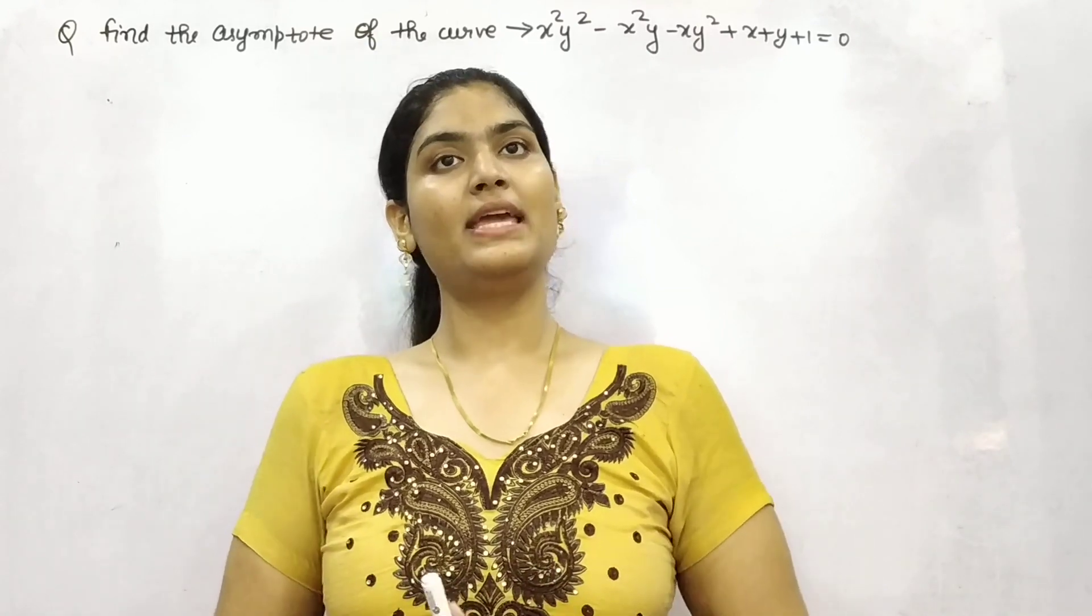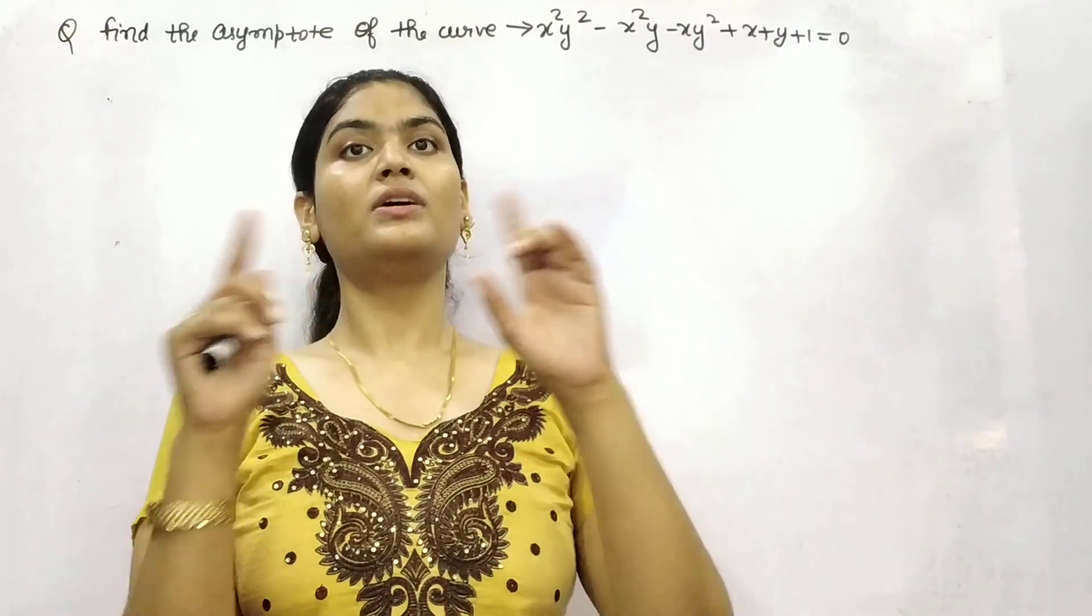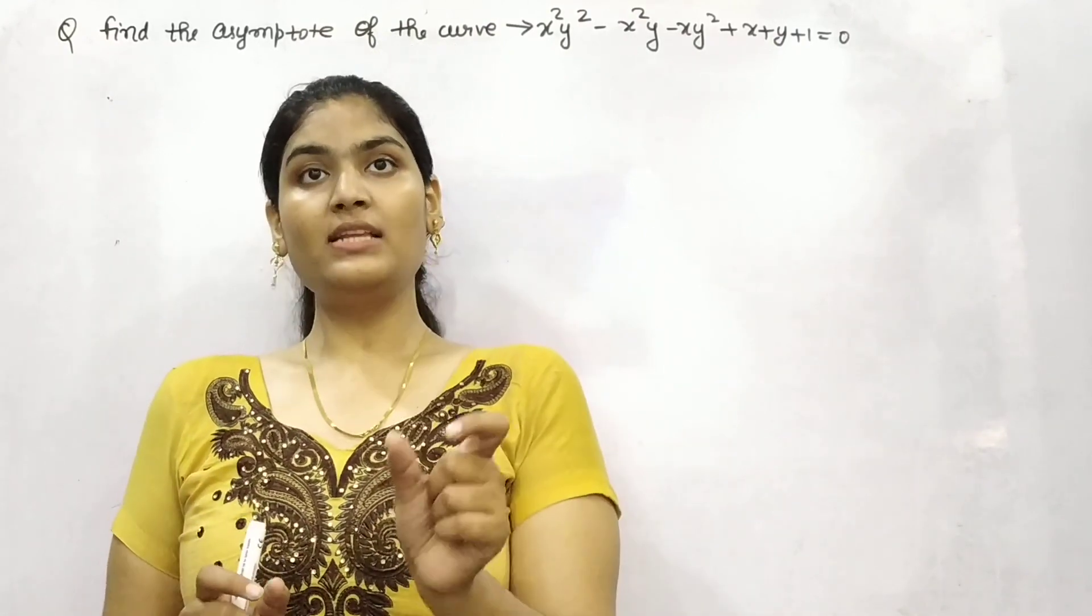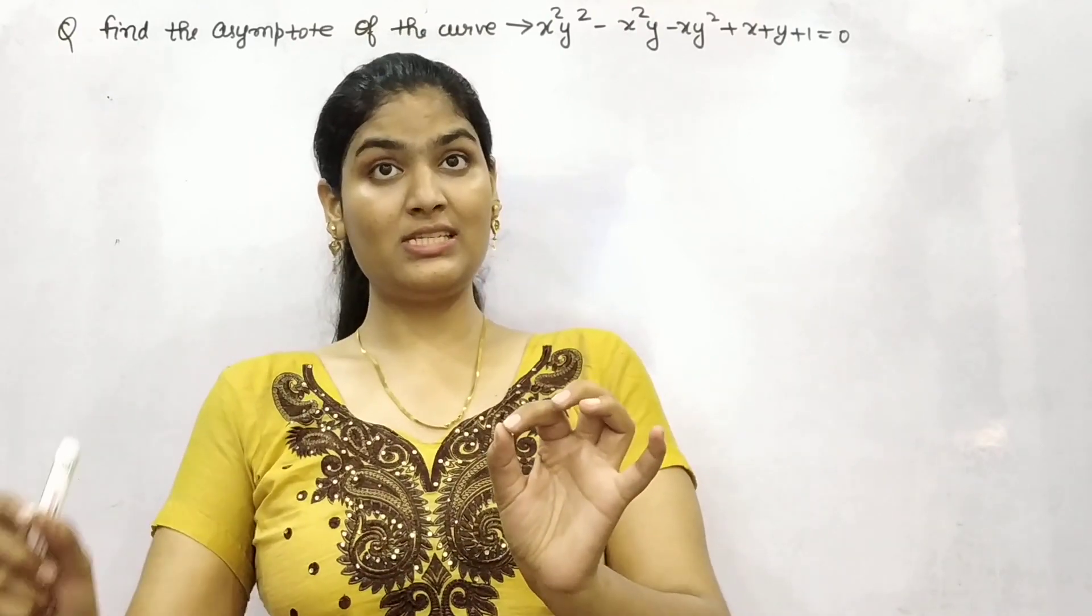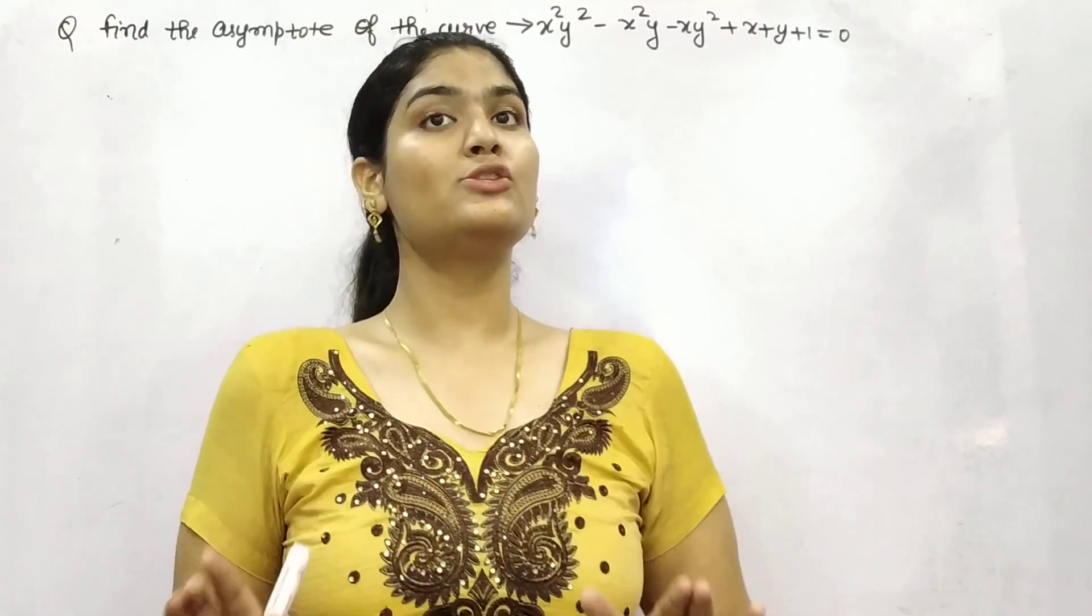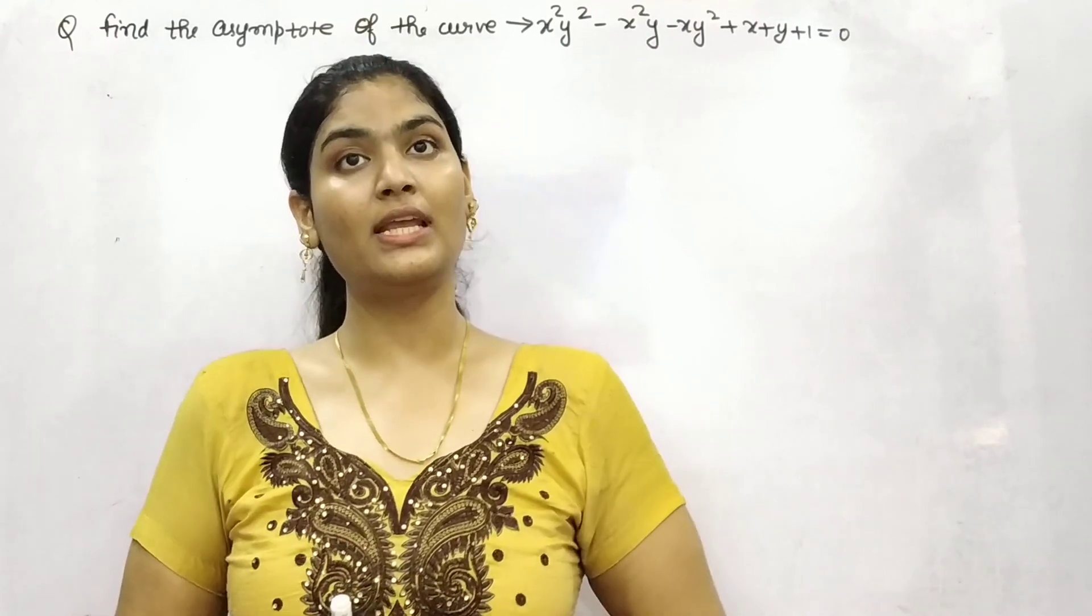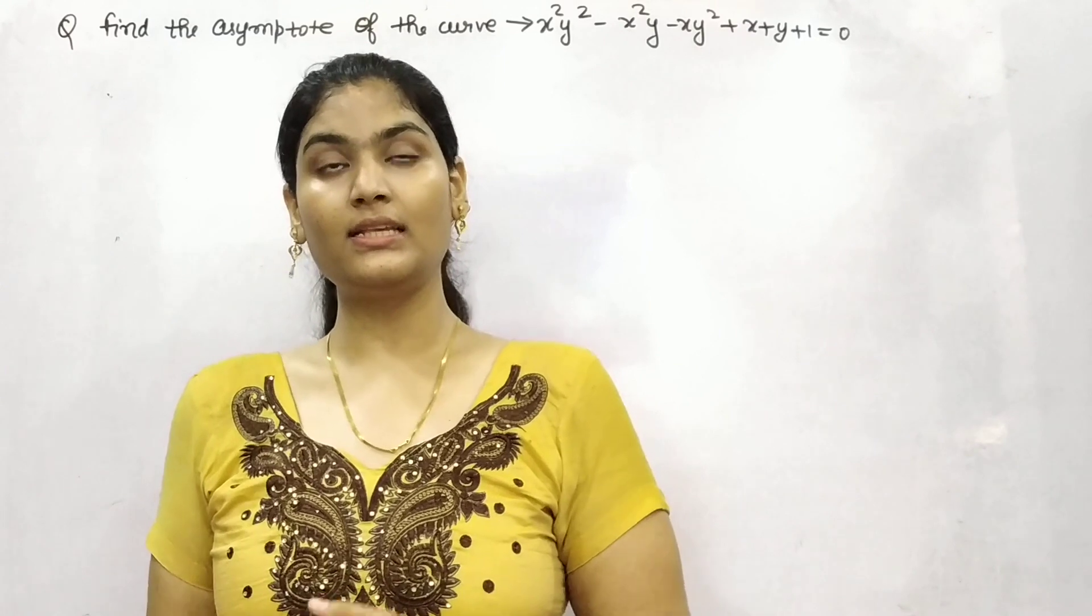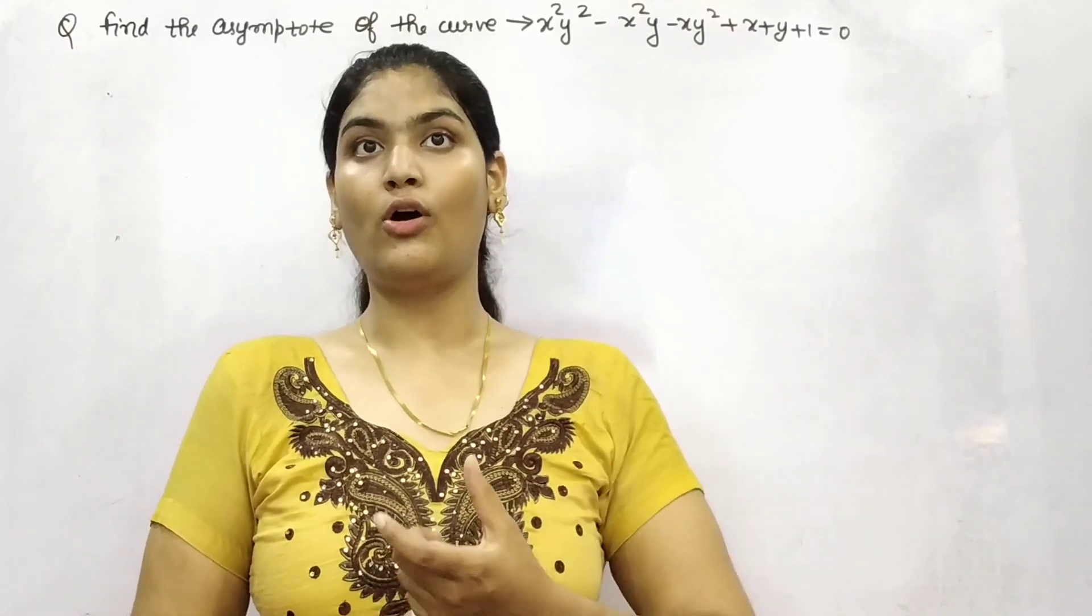What are asymptotes? This is basically a straight line which cuts a curve at two points, and its distance from the origin is infinite. However, it is not fully infinite, but the distance is infinite and we have to check whether the asymptote is parallel to x-axis or parallel to y-axis by seeing the equation of the curve.